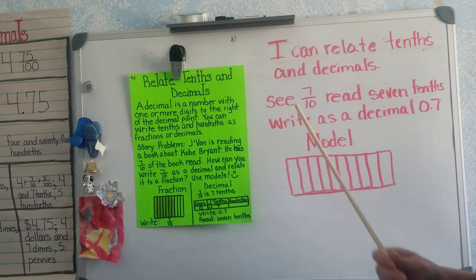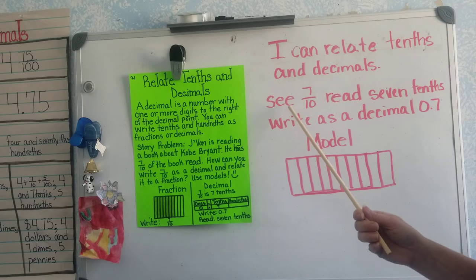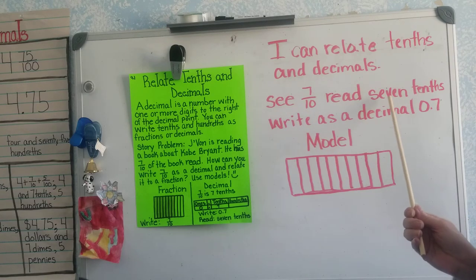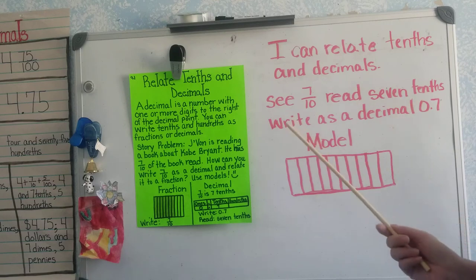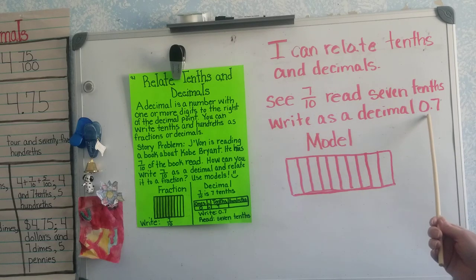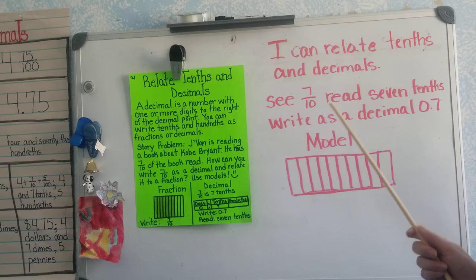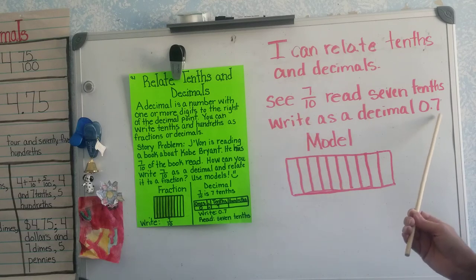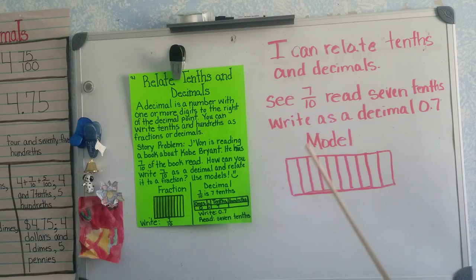So an example here is 7 tenths. We see that as a fraction, we read it as seven tenths, and when we go to write it as a decimal, we write 0.7. So we see it as zero point seven and we read it as seven tenths.